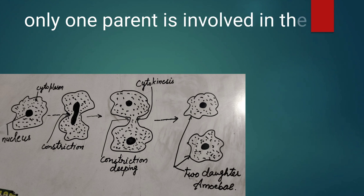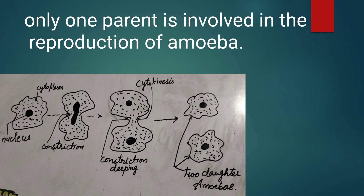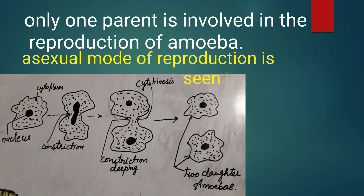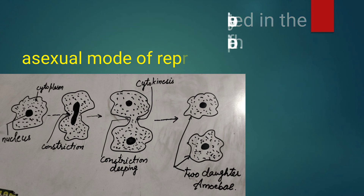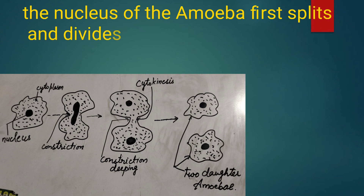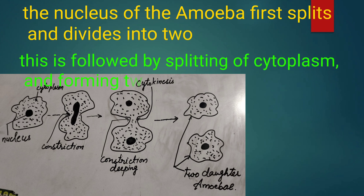Only one parent is involved in the reproduction of amoeba. Asexual mode of reproduction is seen in amoeba. The nucleus of the amoeba first splits and divides into two parts, followed by splitting of the cytoplasm, forming two identical amoeba.